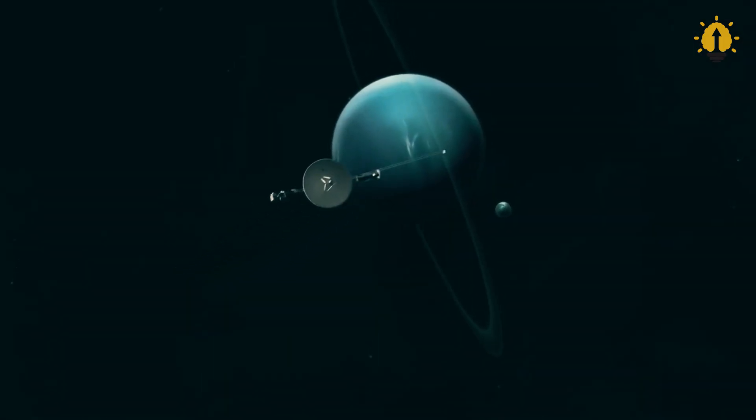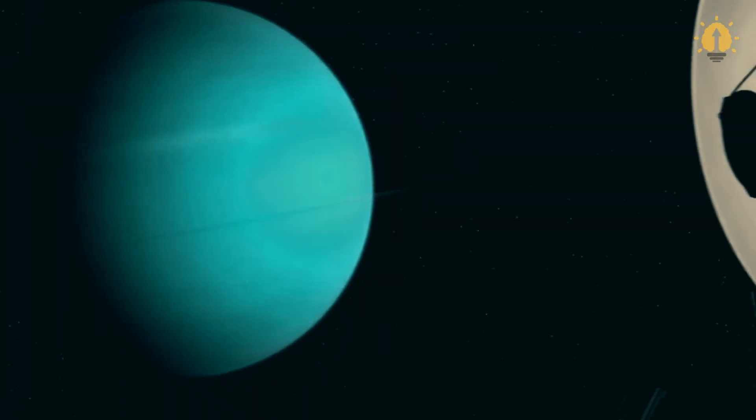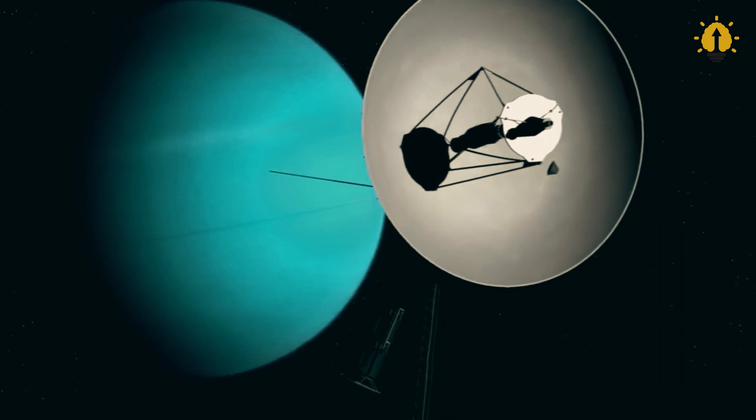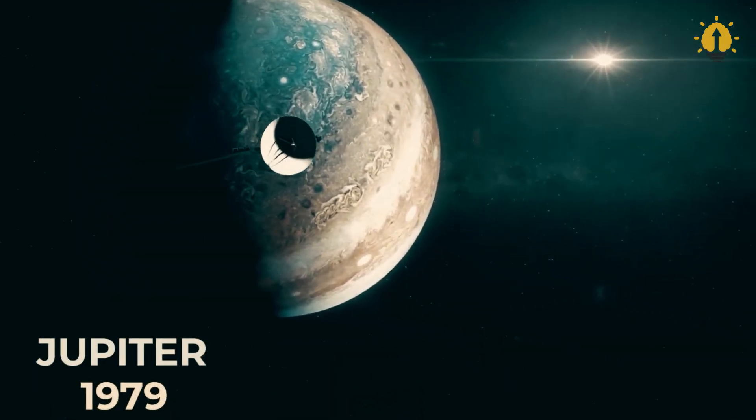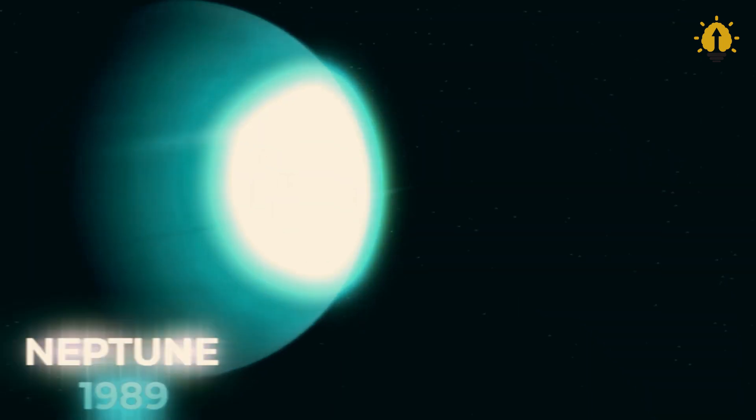Their journey was all the more remarkable because they hinged on a rare celestial event occurring once every 176 years, a planetary alignment involving Jupiter, Saturn, Uranus, and Neptune.